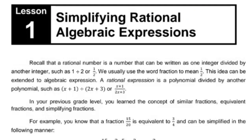Recall that a rational number is a number that can be written as one integer divided by another integer, such as 1 divided by 2, or one half. We usually use the word fraction to mean one half. This idea can be extended to algebraic expressions. A rational expression is a polynomial divided by another polynomial, such as the quantity of x plus 1 divided by the quantity of 2x plus 3. In your previous grade level, you learned the concept of similar fractions, equivalent fractions, and simplifying fractions.